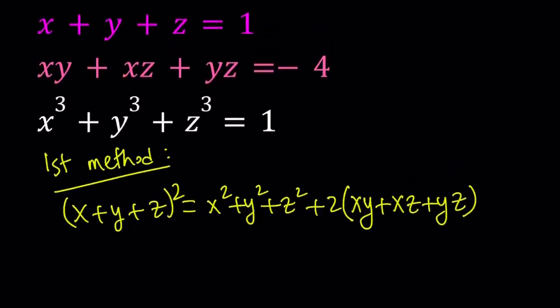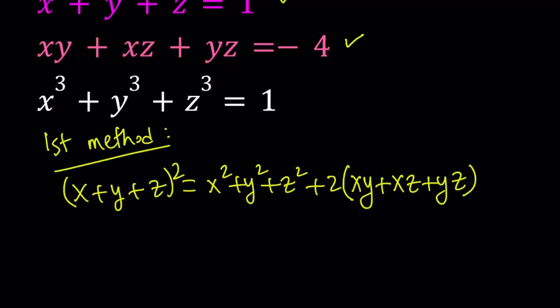One motivation behind this is we already know x plus y plus z and the xy plus xz plus yz. So we can go ahead and substitute that. So it's going to be 1 equals x squared plus y squared plus z squared plus 2 times negative 4, which is negative 8.